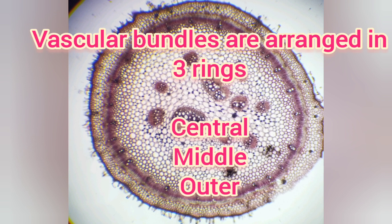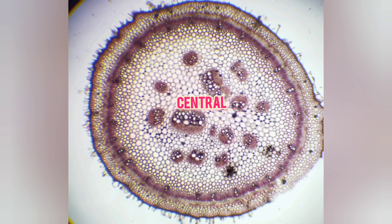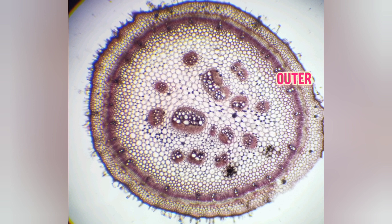The pericycle is 1-2 layers. Vascular bundles are arranged in 3 rings — central, middle, and outer. This is our stem section. Centrally, there are 2 large vascular bundles. The middle ring has 6-14 loosely arranged bundles. The outer ring has 15-20 small bundles present.